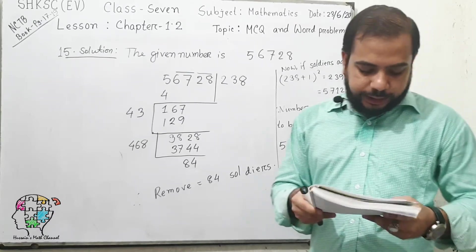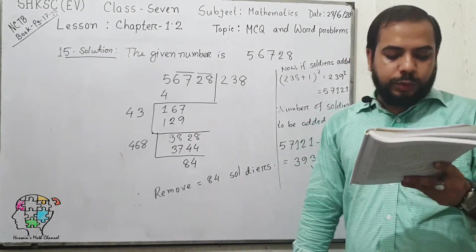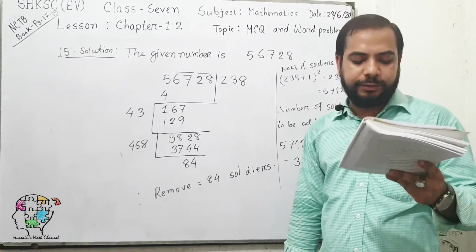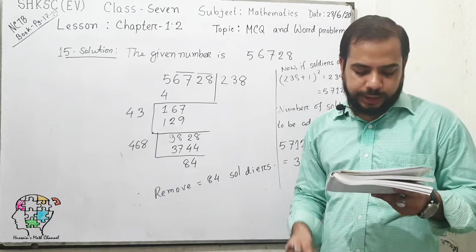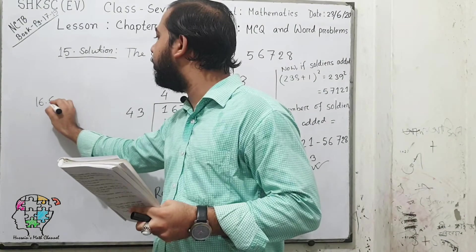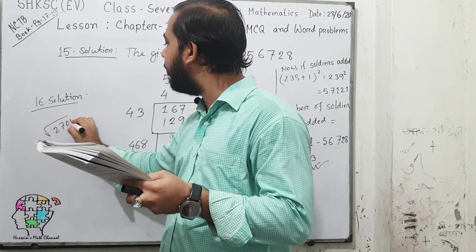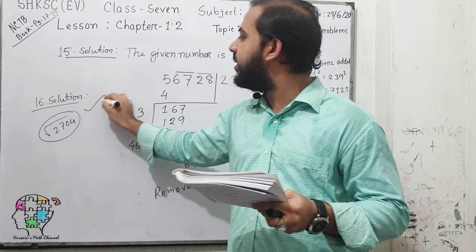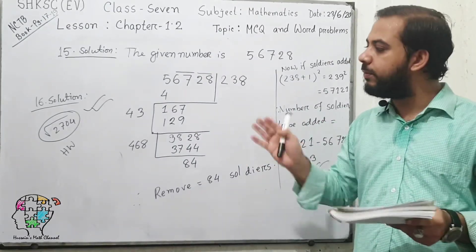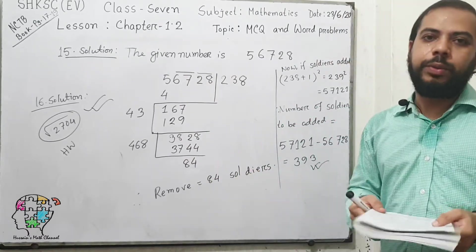Now read question number 16: 2,704 students of a school are arranged in a square for display — find the number of students in each row. From the question, you can see this is a perfect square number. So the solution for question 16 is simply to find the square root of 2,704. Question number 16 will be your homework — it is very easy, just find the square root using this method.